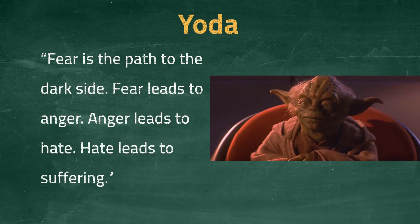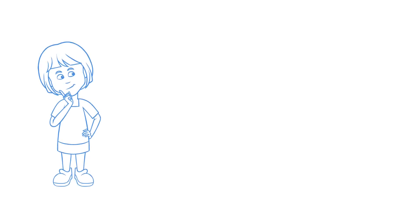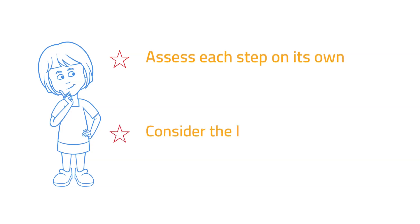Tell me what you think in the comments section. When you see someone use this argument, consider whether it is fallacious. Assess each step on its own. Consider the likelihood of the step. Remember, the more steps there are, the more unlikely it is that the first will lead to the last. If any of the steps are unreasonable, or the overall probability is too low, then it is unreasonable to adopt the argument. As always, politely point out the mistake. Avoiding logical fallacies will make for stronger arguments and lead to better discussions.